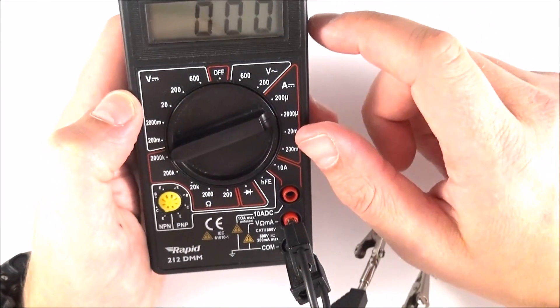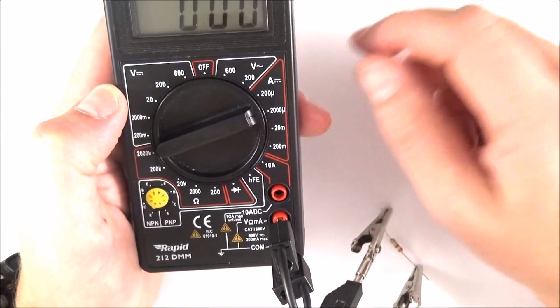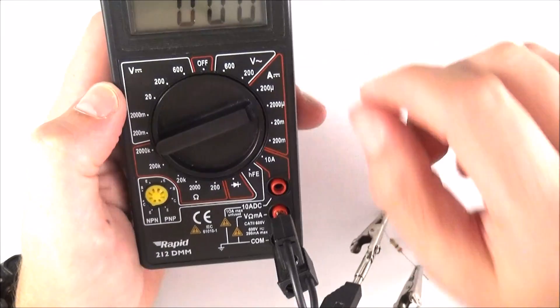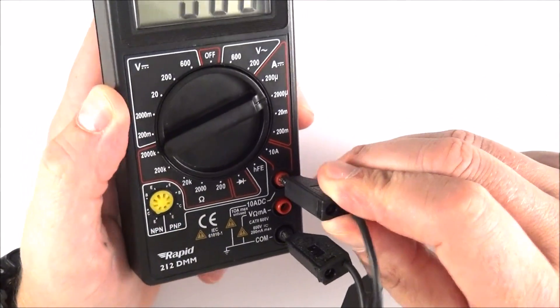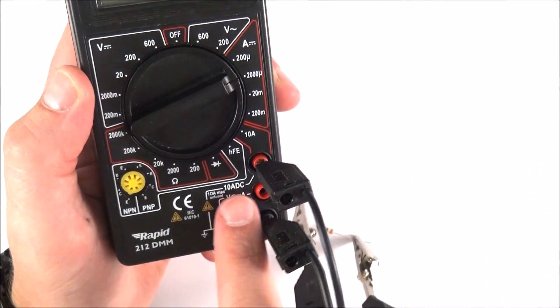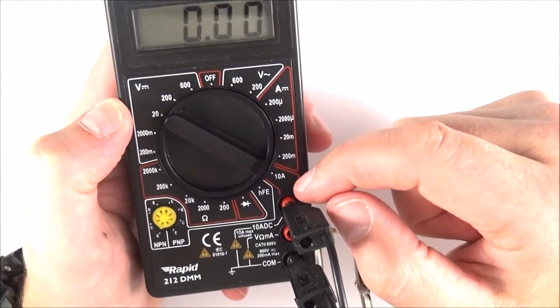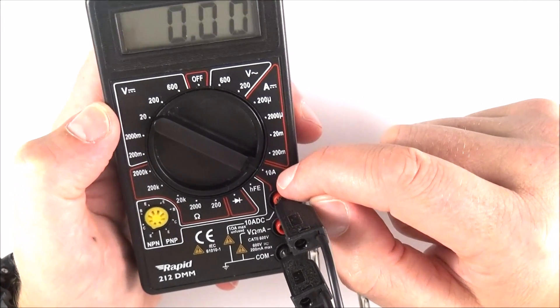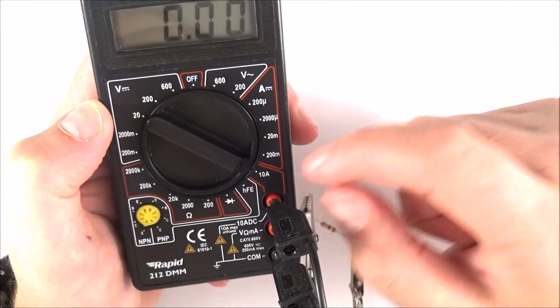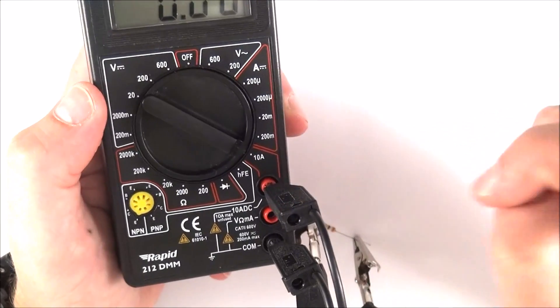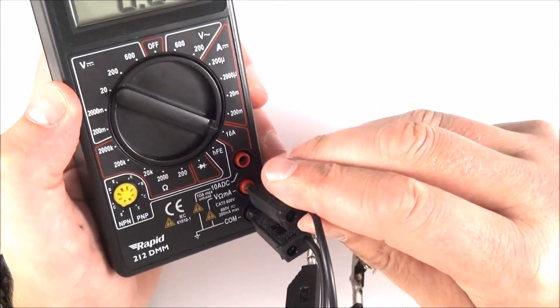If you do blow the fuse, it can be replaced, but obviously that's another job for the teacher or the technician to carry out. If you want to measure big currents, you can start using this one here, and I think it basically says 10 amps down here. Turn the dial to 10 amps, and you know, 10 amps is pretty big. That's kind of almost like quite dangerous levels of current, quite a lot of heating effects. Just choose the appropriate dial.